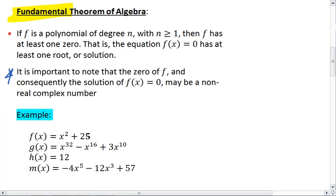We saw this earlier with quadratics, such as f(x) = x² + 25. We know that the graph of this function would be a parabola with a vertex at (0, 25).